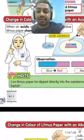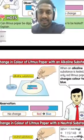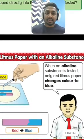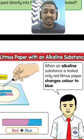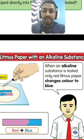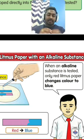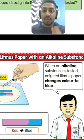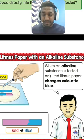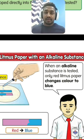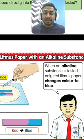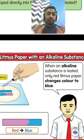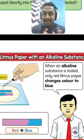Next, the change in color of litmus paper with an alkaline substance. When an alkaline substance is tested, the red litmus paper changes color to blue. For example, toothpaste — if we test the red litmus paper using toothpaste, it will change to blue. So if the red litmus paper changes to blue, it means the substance is alkaline.